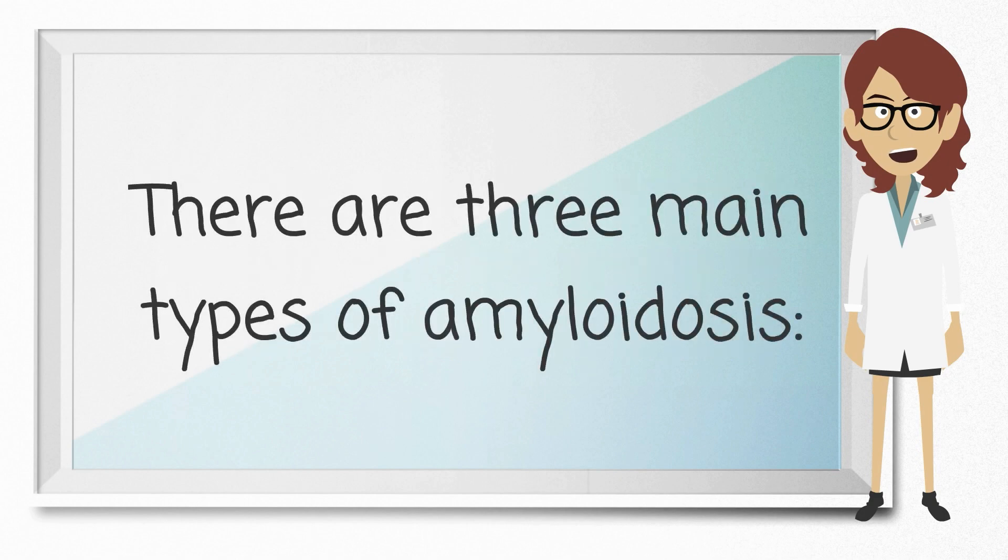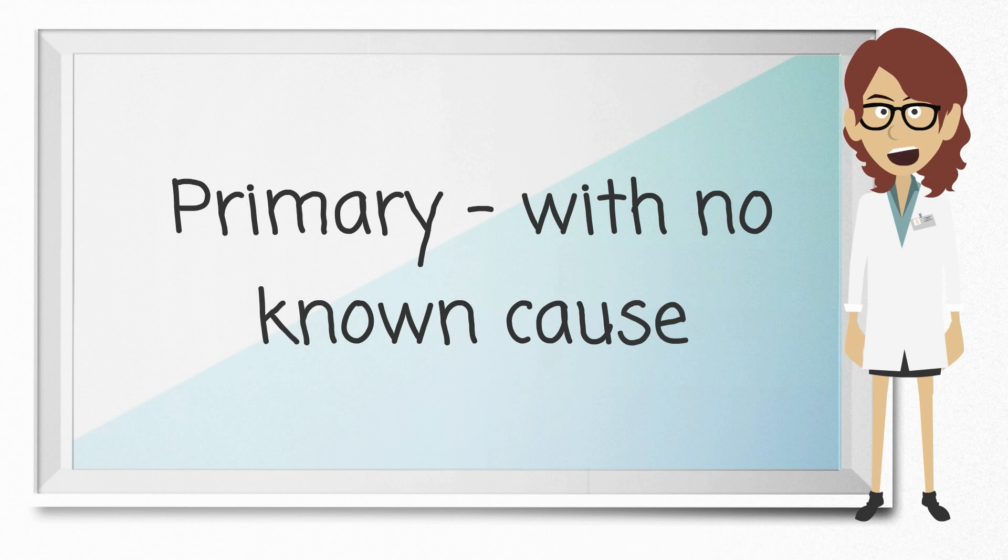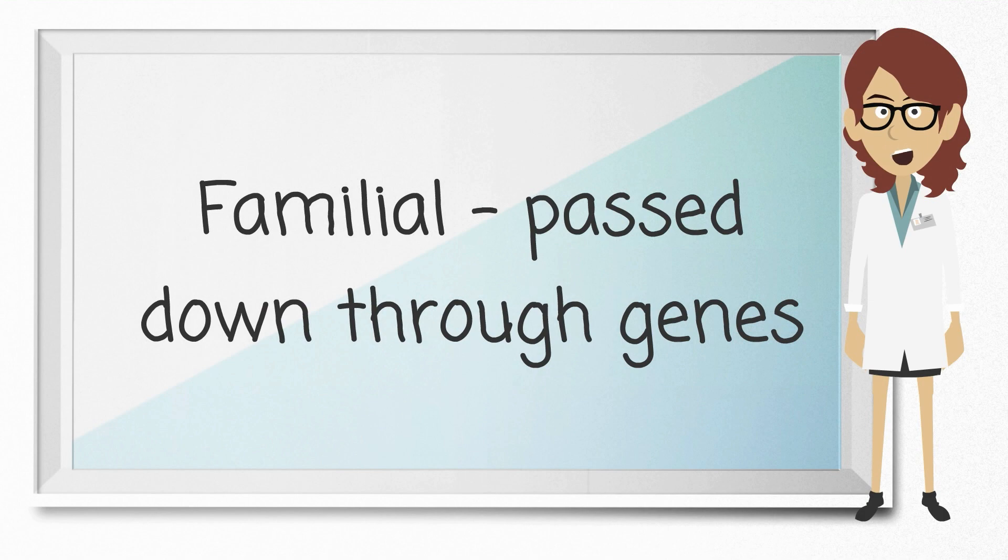There are three main types of amyloidosis. Primary, with no known cause. Secondary, caused by another disease, including some types of cancer. Familial, passed down through genes.